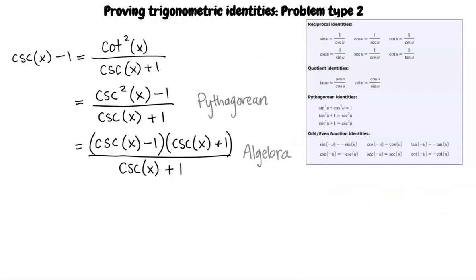I see that now we can cancel out cosecant of x plus 1 because it is on both the numerator and the denominator. Yes, that's the next step. This is also an algebraic step so we can write our proof as cosecant of x minus 1, algebra. Now that we have proven the original expression, we have completed the proof.